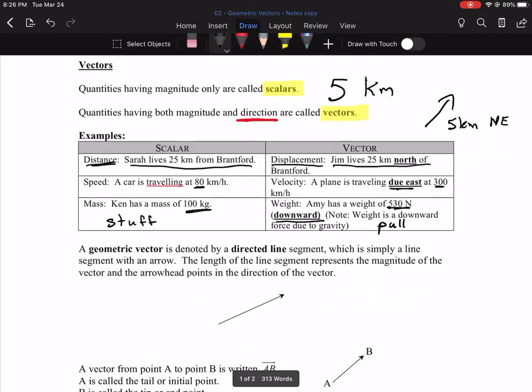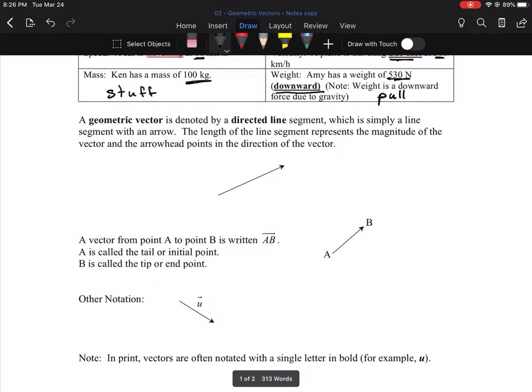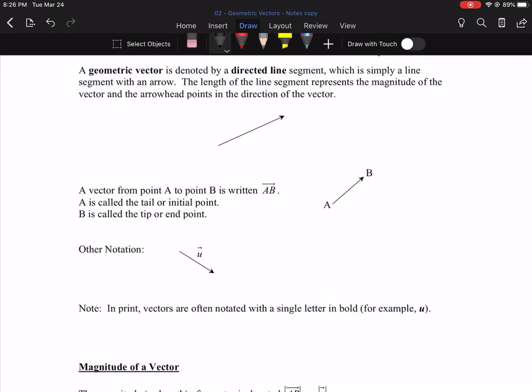So simply put, a geometric vector is denoted by a directed line segment. So we'll just be drawing lines, like the one you see here. A line segment with an arrow on the end. The arrow is very important. The arrow tells you which direction we're talking about, because the vector that points this way will be different than a vector that points that way.